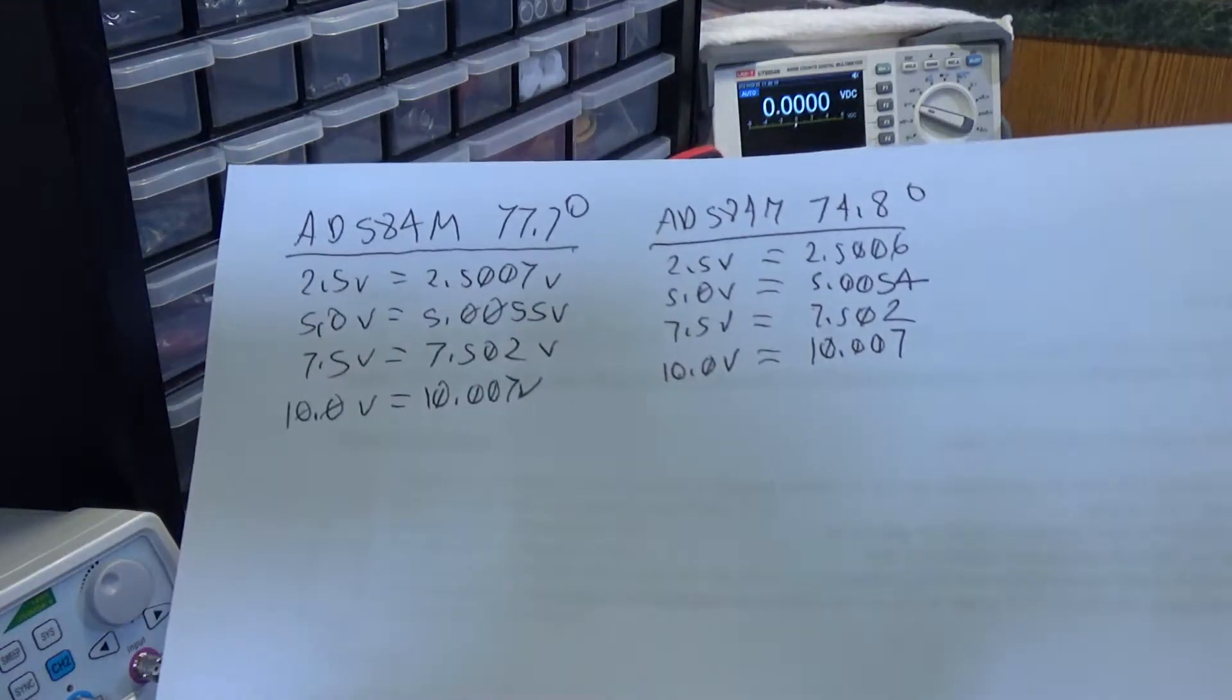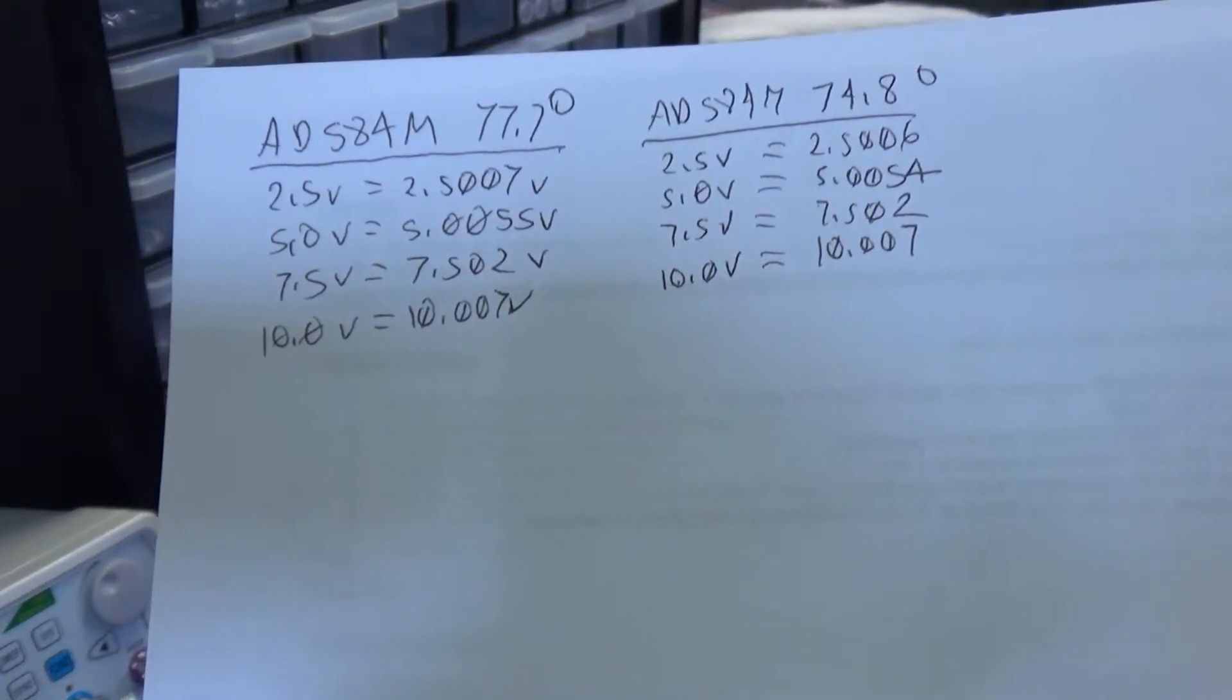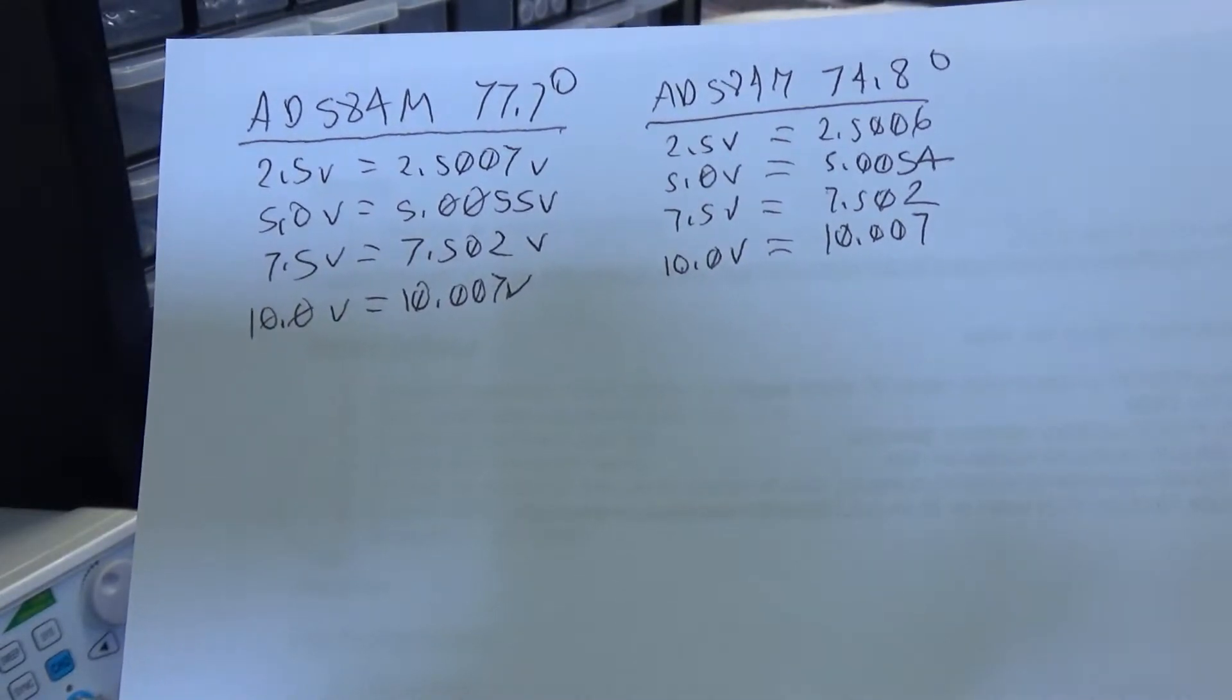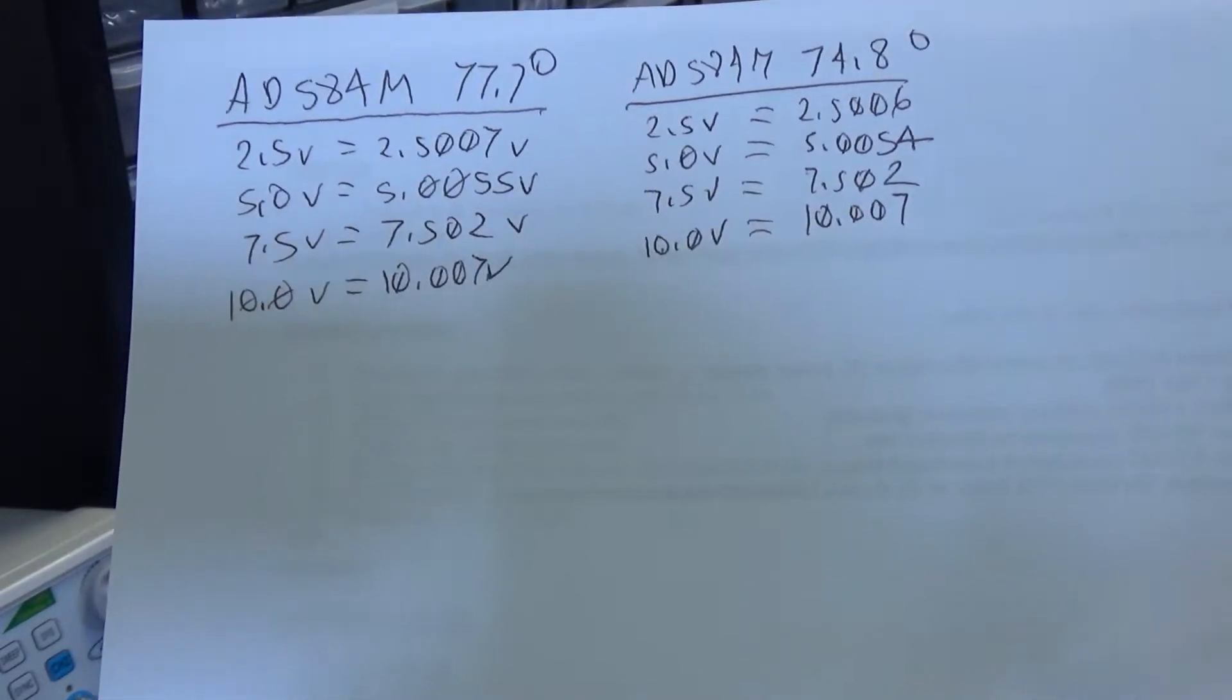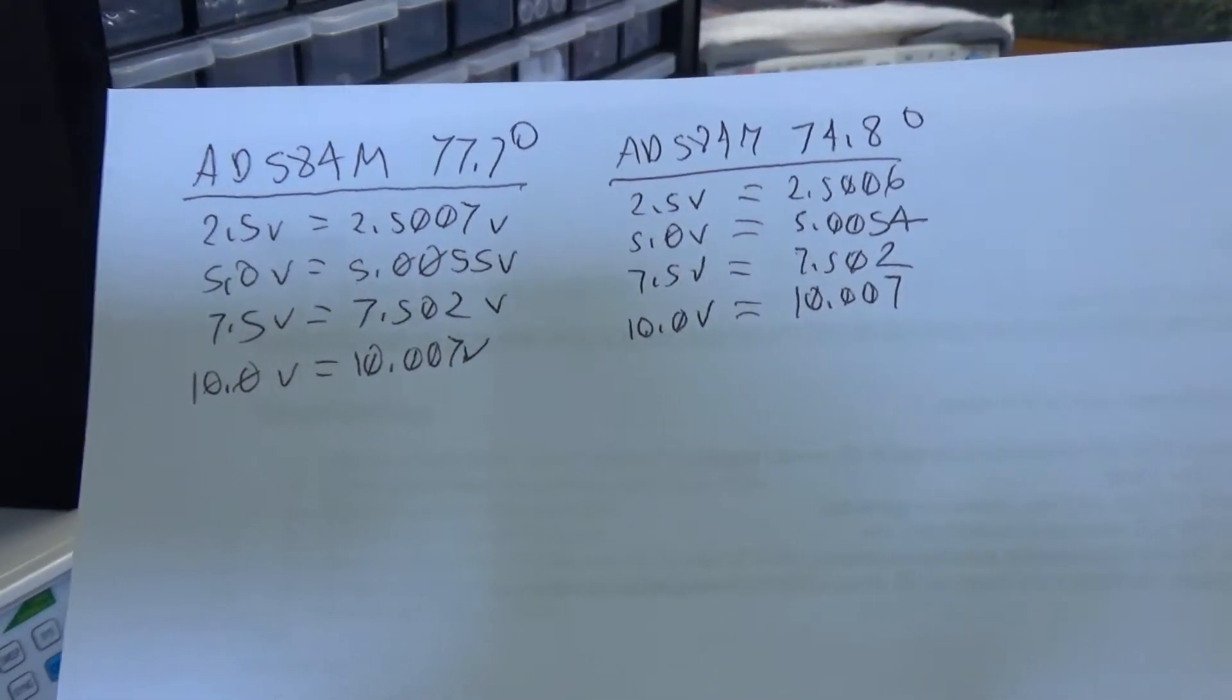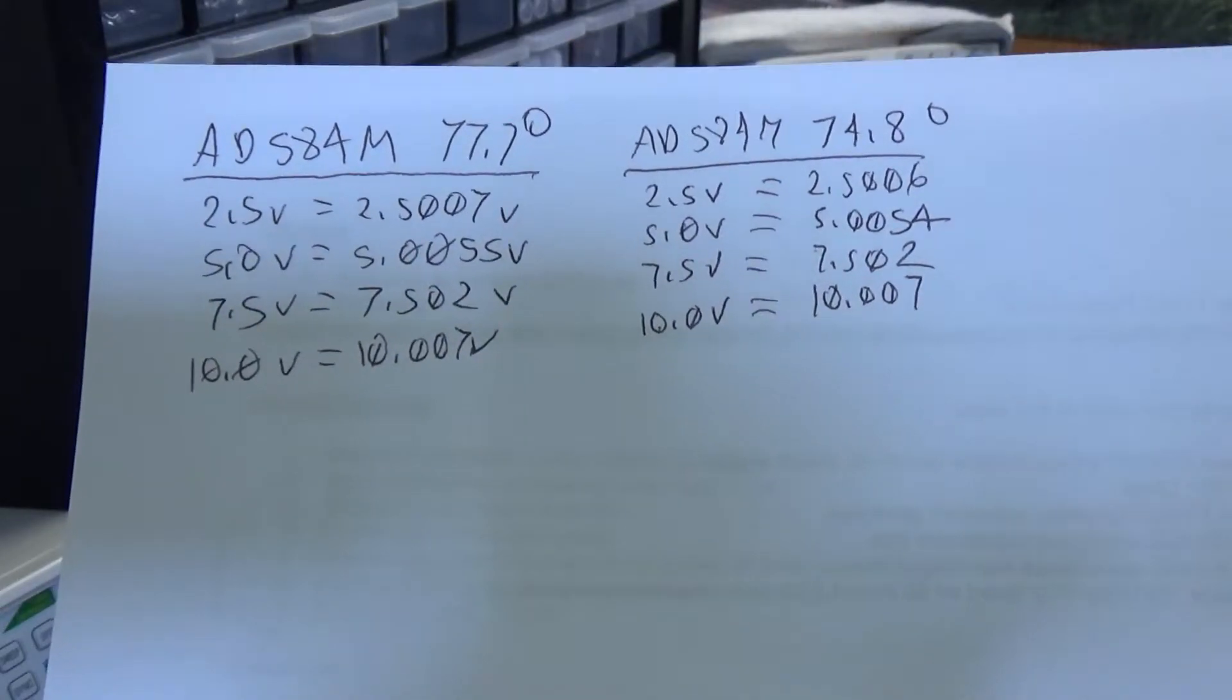And as you can see there, 77.7 degrees. There are some slight variations on the 2.5 and the 5.0 volt settings. 77.7 and 74.8, you see there's a 10,000th of a difference on what the median was. And this was very, very stable. I know this is not the best reference in the world, but it's pretty consistent.